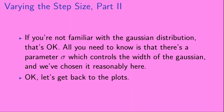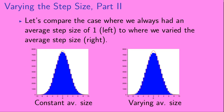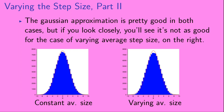If you're not familiar with the Gaussian distribution, that's okay — all you need to know is that there's a parameter sigma which controls the width of the Gaussian, and we've chosen it reasonably here. Let's compare the case where we always had an average step size of 1 (shown on the left) to the case where we varied the average step size (shown on the right). The Gaussian approximation is pretty good in both cases, but if you look closely, you'll see it's not quite as good for the case of varying average step size. In the plot on the right, the red Gaussian curve is a bit above the blue bins both in the middle of the plot and in the extreme tails, and the red curve falls a bit below the blue bins in other parts of the plot.